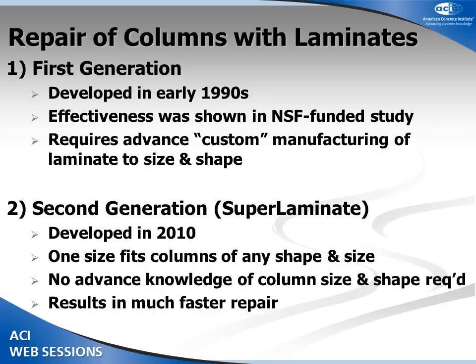He developed his technique when he was teaching at the University of Arizona. These first-generation laminates were developed in the 1990s. The disadvantage was that they had to be custom-built — you had to know the dimension of the column ahead of time. Whereas the new technique, which he calls the second-generation superlaminate, developed in 2010, is in the form of continuous, flexible FRP laminates that you can wrap around an existing column of any size, any shape, and then fill the annular gap between the two materials. He claims it can be done by a two-man crew and you really don't need skilled labor.